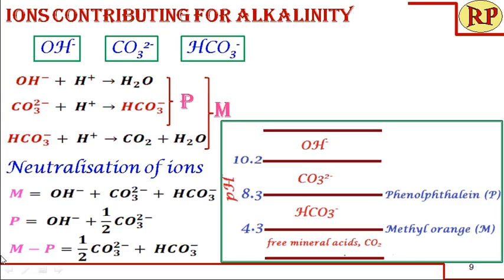At the methyl orange endpoint, all three ions are neutralized. So M minus P — the volume of sulfuric acid consumed beyond the phenolphthalein endpoint — indicates the neutralization of the remaining half of carbonate and the bicarbonate. This is very important to understand and remember for the rest of this presentation.